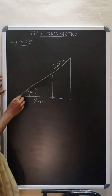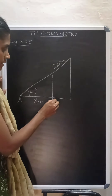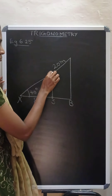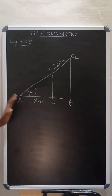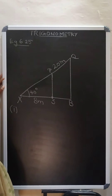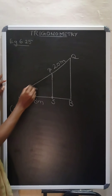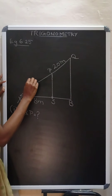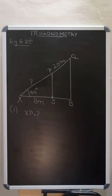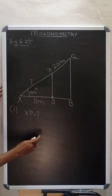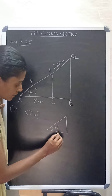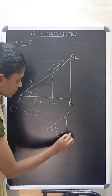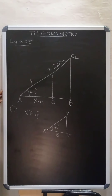Now we will name this: X, small tree, big tree. I will label it as PQ — you can name it any way. Now first, they are asking you to find the distance between the point X and the top of the smaller tree, so they are asking you to find XP. Now take this particular triangle. Here you have 40 degrees, here 8 meters, and the points are P, S, and X.